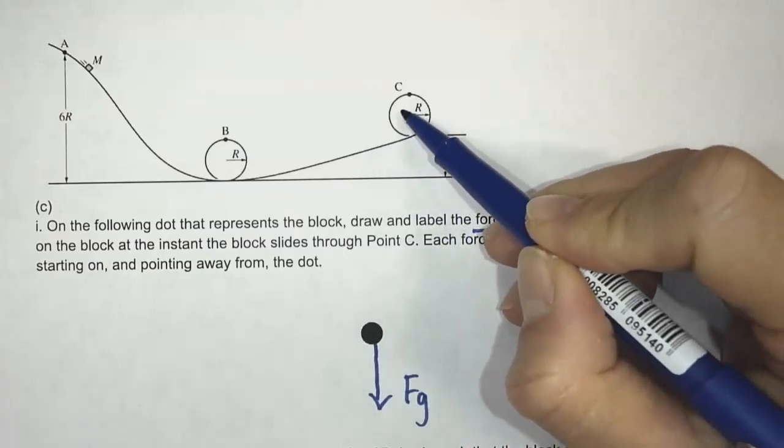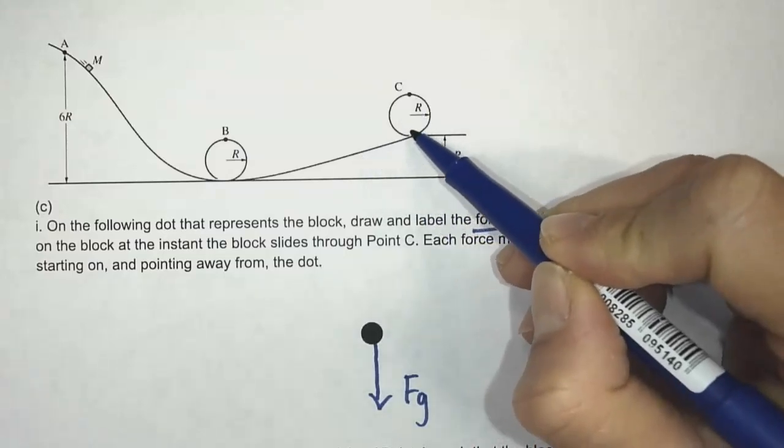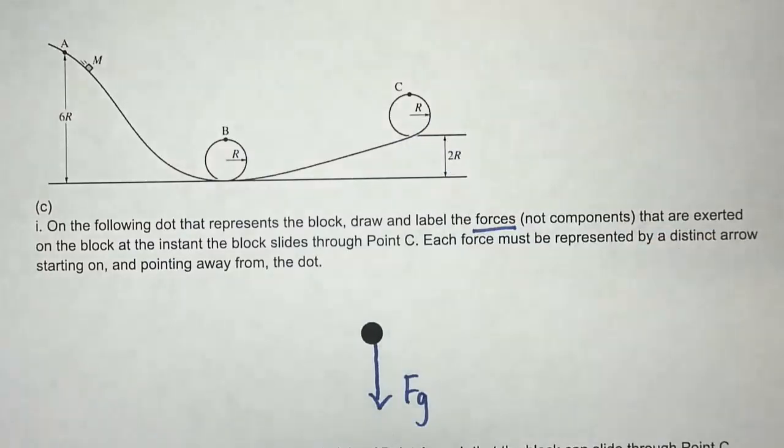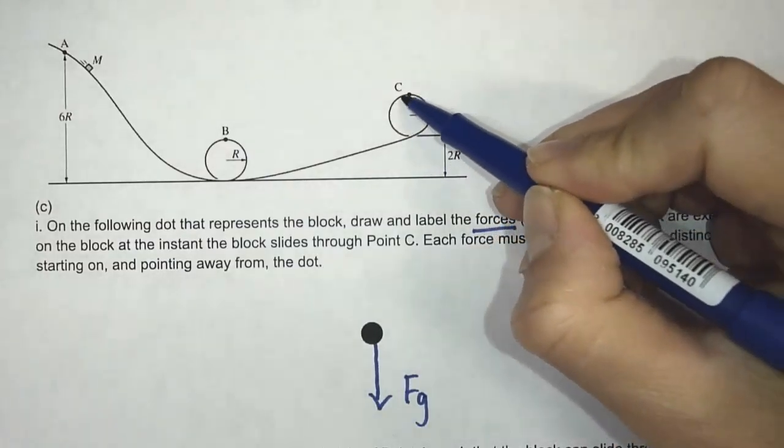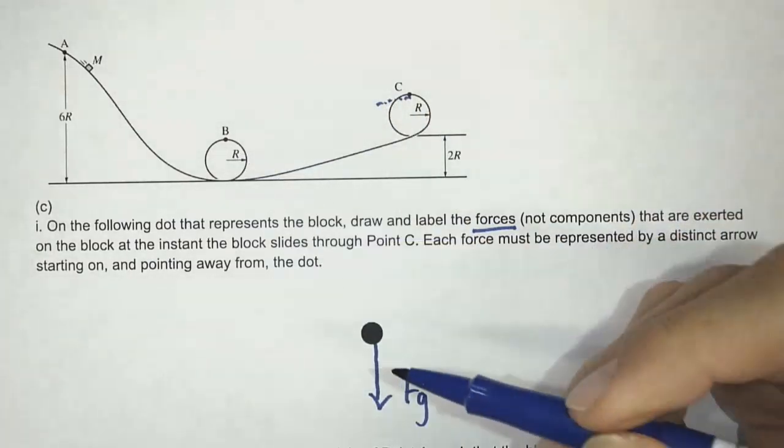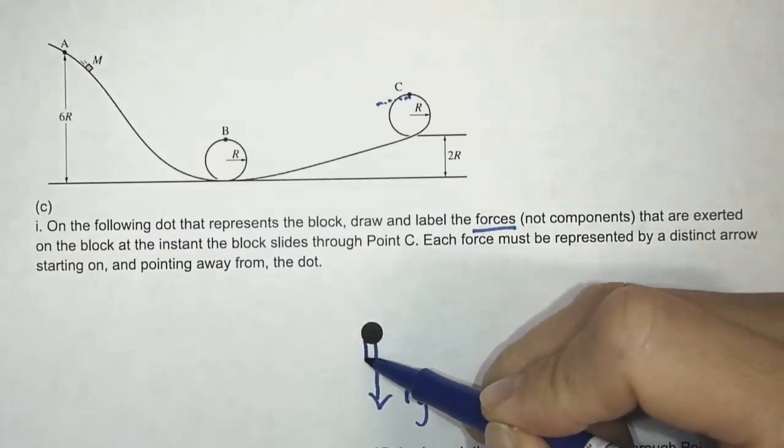So this block is going to stay in contact with the track if it goes fast enough. If it doesn't go fast enough, it's going to fall. So it needs to go fast enough. And if you think about inertia, an object in motion will want to try to resist a change in motion. At this point, it's going to want to keep on going, but what happens is there's a track, and so that track gets in its way.